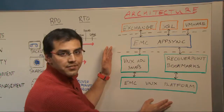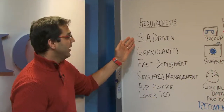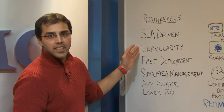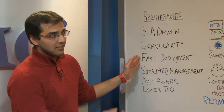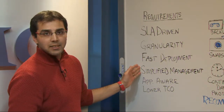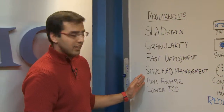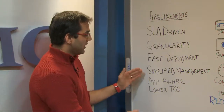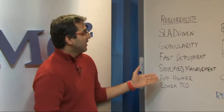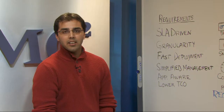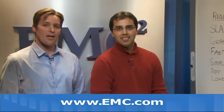Let's see how all of this fits in with the requirements we discussed earlier. AppSync is an SLA-driven solution. It provides the granularity that you require with your applications. It's a fast deployment, especially with the service plans. It provides simplified management of all the EMC replication technologies. It is application-aware. And finally, all of these requirements together produce lower TCO for you. If any of these requirements meet your challenges that you're currently facing, please contact an EMC rep today, or visit us at EMC.com. Thank you.